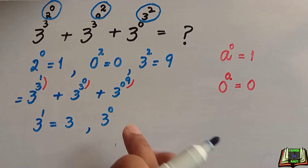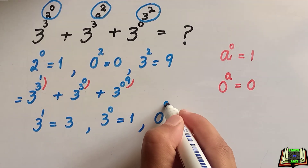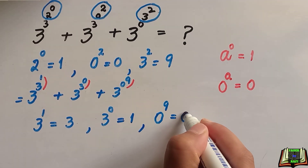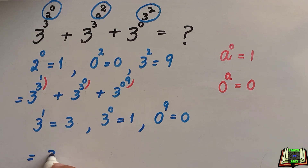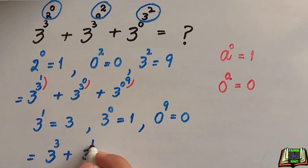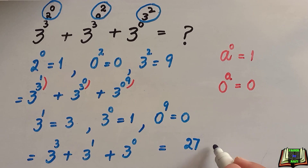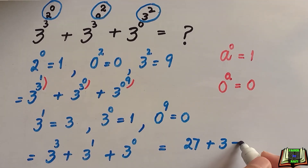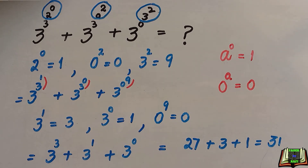And 0 raised to power 9 — since 0 raised to any number is equal to 0. Now putting the values of these parentheses in: 3 raised to power 3, plus 3 raised to power 1, plus 3 raised to power 0. That gives us 3 raised to power 3, which is 3 times 3 times 3 equals 27, plus 3 raised to power 1 which is 3, plus 3 raised to power 0 which is 1. Adding: 27 plus 3 is 30, and 30 plus 1 is 31. That is the final and required answer.